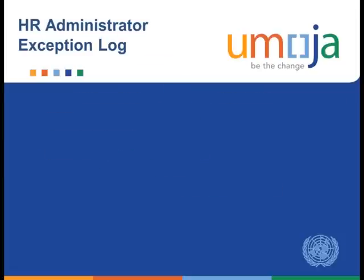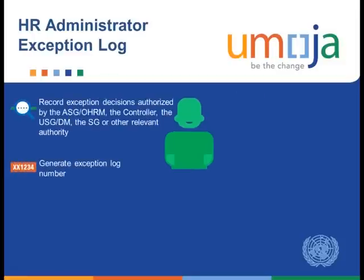Finally, let's take a look at the role of the HR Administrator Exception Log. As the name suggests, this role records the exception decisions authorized by the Assistant Secretary General for Human Resources Management, the Controller, the Undersecretary General for Department of Management, the Secretary General, or other authorities, and generates the exception log number that is then conveyed offline to the requester to proceed with subsequent actions in Umoja. The exception log number serves as a reference number that facilitates the tracking of policy exceptions that have been granted.